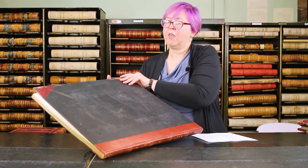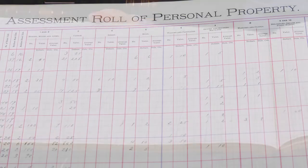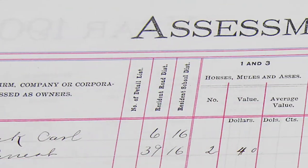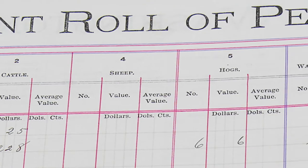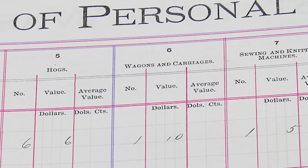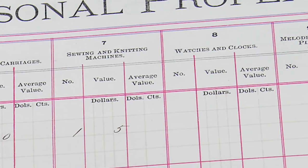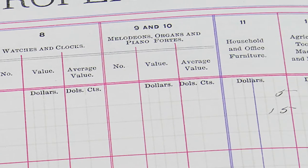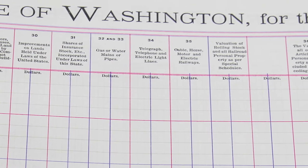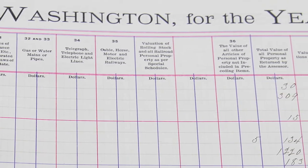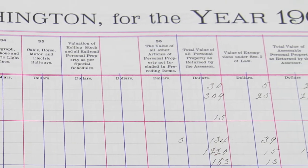Personal property rolls are a tax roll created to note personal property, and this is a rather large book as you can see. What's interesting about these is they list different individuals and the property they claimed, which can include things like horses, cattle, sheep, hogs, sewing machines, watches and clocks, and different types of instruments. I helped a researcher look for a family piano to see how old it might have been. There was a lot of information missing and it was really scarred. We were trying to find out approximately when the family acquired it, and we used the personal property taxes to do that.